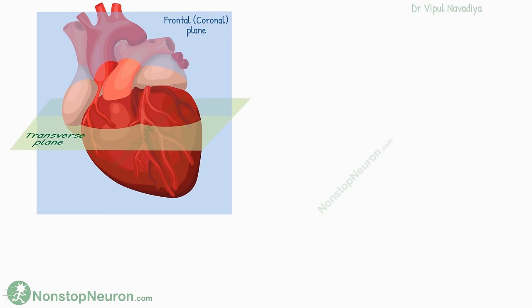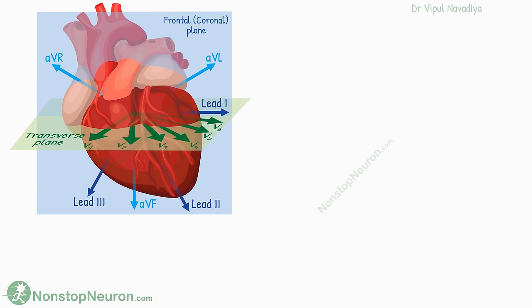V1 is placed on the fourth intercostal space to the right of the sternum. V2 on the fourth intercostal space to the left of the sternum. V4 on the fifth intercostal space at the midclavicular line. V3 halfway between V2 and V4. V6 on the fifth intercostal space at the mid-axillary line. And V5 halfway between V4 and V6. Thus, from the common negative electrode inside the heart to a positive electrode on the surface, we have six directions. Bringing all leads together: on the frontal plane we have Leads 1, 2, and 3, plus AVR, AVL, and AVF; on the transverse plane we have six precordial leads V1 to V6 — giving us 12 leads total.